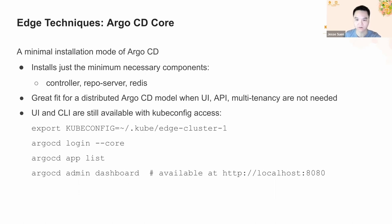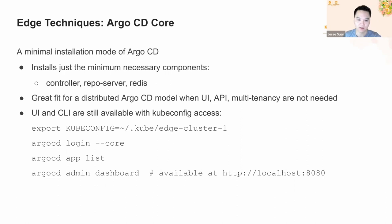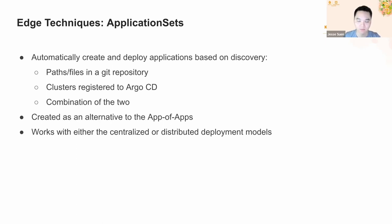I'd like to describe some specific Argo CD features useful for managing edge clusters. The first is Argo CD Core. If you go with a distributed pull model and run Argo CD on every edge cluster, you should know about this installation mode. You can install only the core components — the controller, repo server, and Redis — and Argo CD acts more like a basic bare-bones GitOps operator. This is a good option if end users never need to access an Argo CD UI for these edge clusters, though you can still use the CLI and UI as long as you have Kubernetes access by running the admin dashboard command.